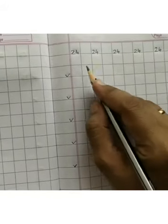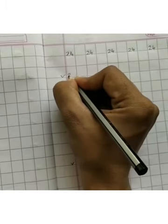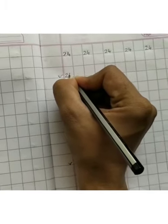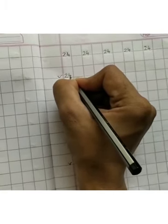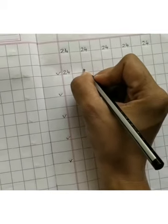Let's learn how to write number 24 in square line book. First of all, put 5 tick marks and start from here. 24. Leave 1 box. And again, write.